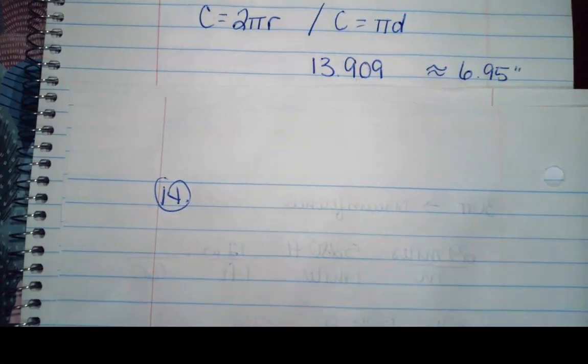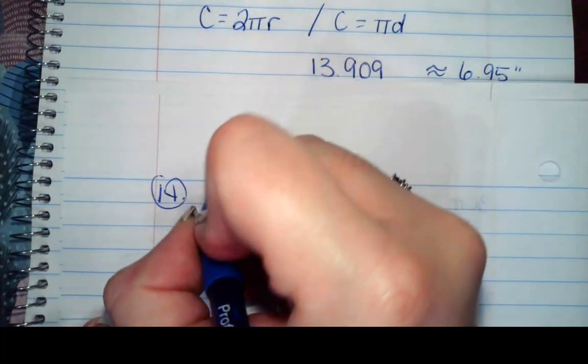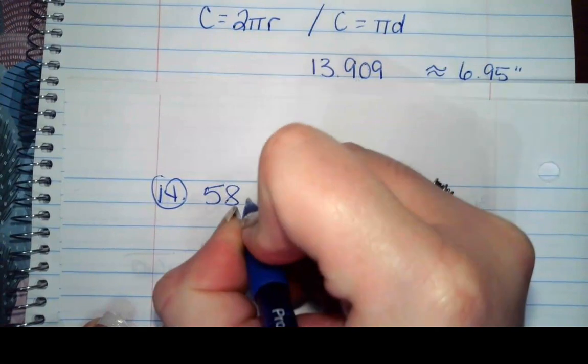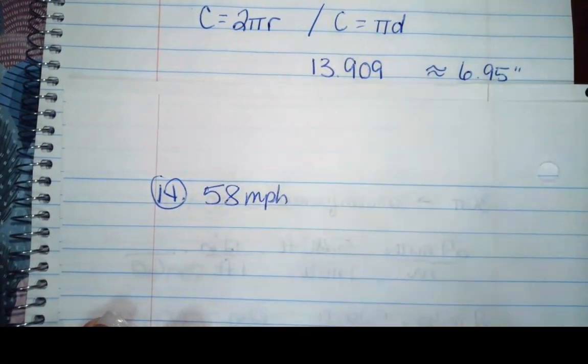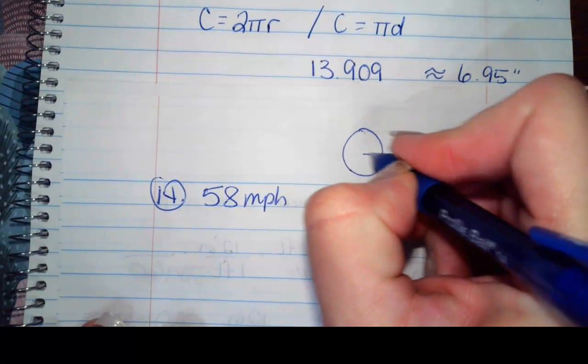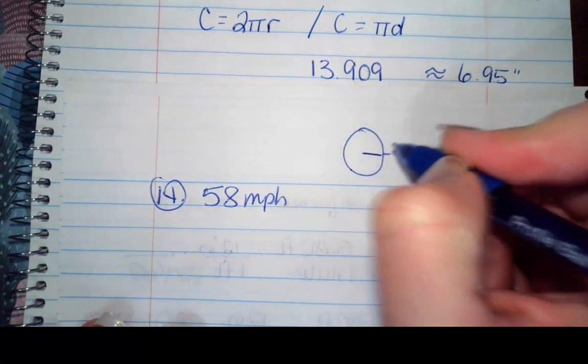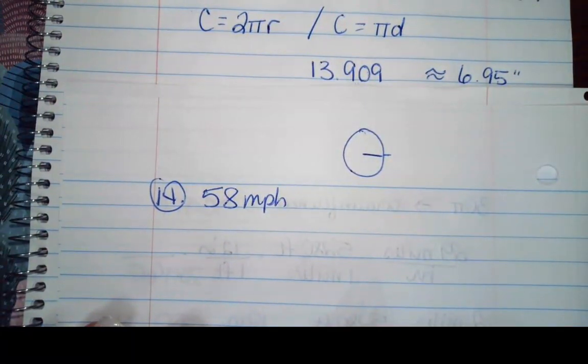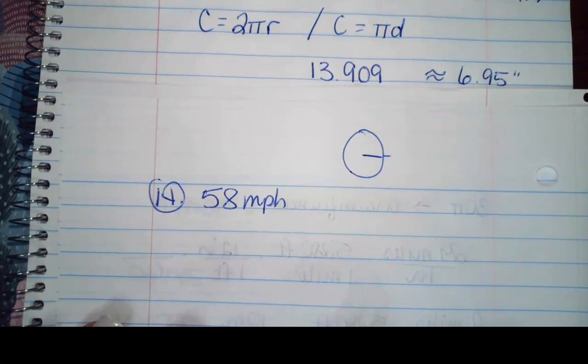So for number 14, we have a car that runs over a nail. The car is going 58 miles per hour. The nail is lodged in the tire tread 13 inches from the center of the wheel. So we have the wheel and the tip of the nail is 13 inches from the center. What is the angular velocity of the nail in radians per hour?